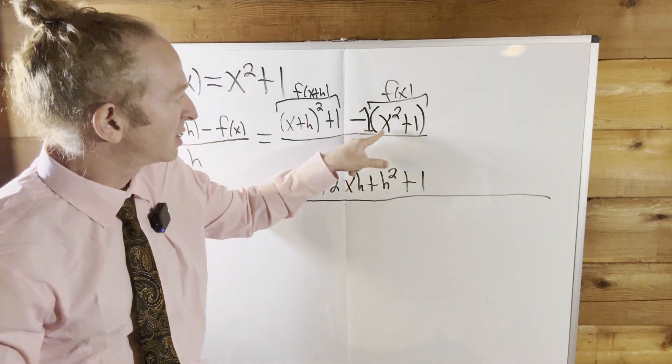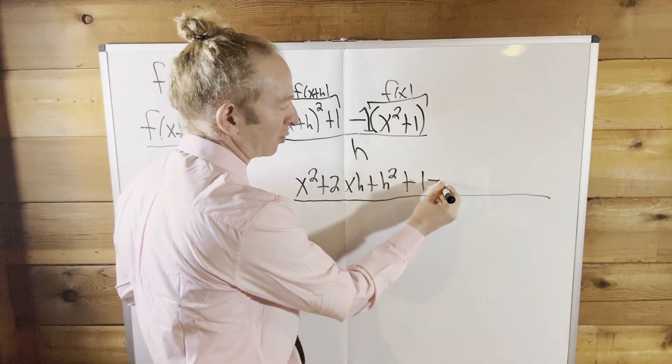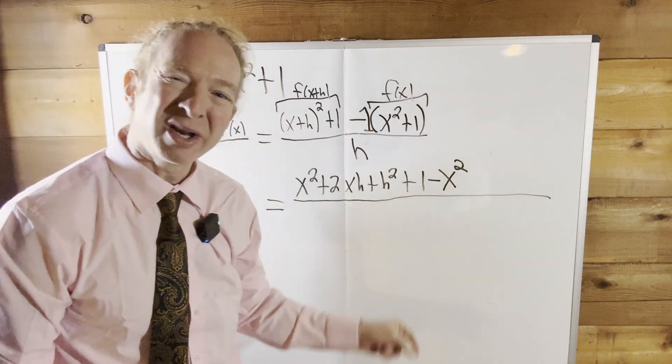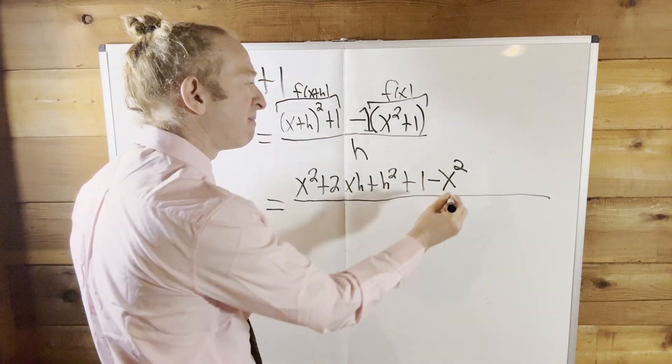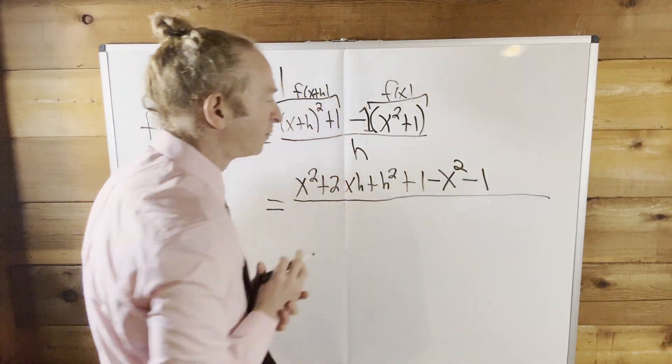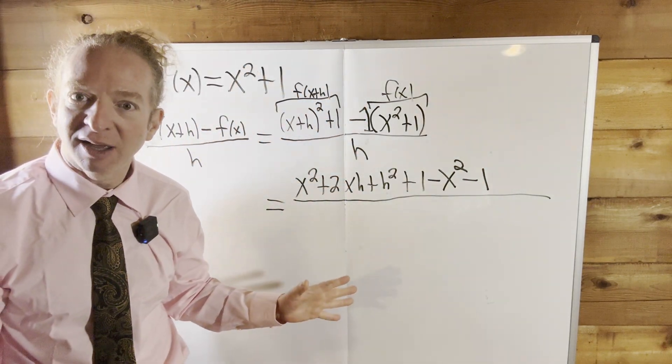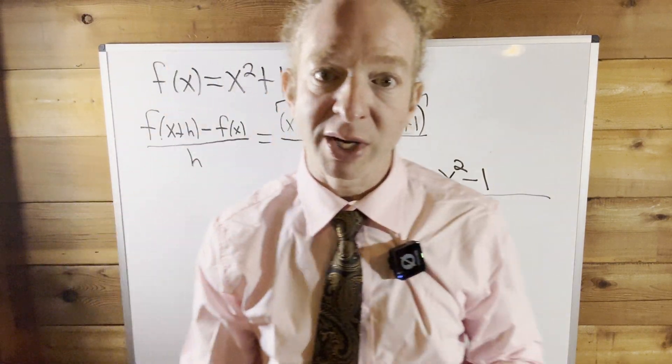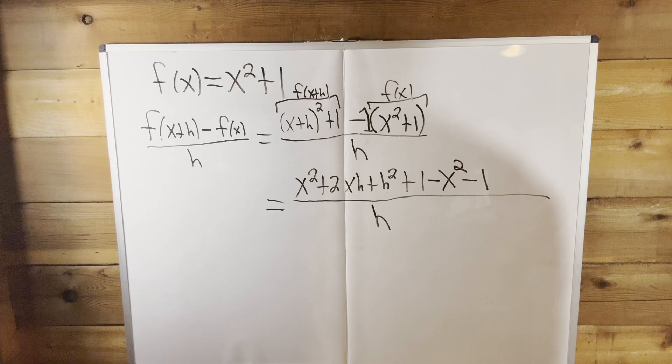So we're going to distribute that negative 1. So negative 1 times x squared is negative x squared or minus x squared. Boom! And then negative 1 times 1 is minus 1. So this is minus 1. Boom! And then what's missing? The h, right? So don't forget, don't forget your little h. That goes right there. Super, super key.